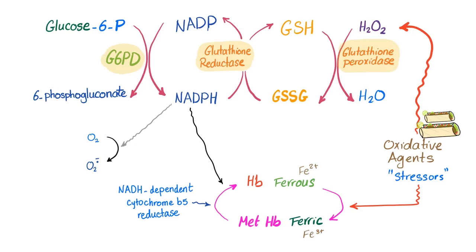If you remember my video on G6PD deficiency: an oxidative agent like the falafel sandwich — specifically Egyptian falafel made of fava beans, which causes favism — produces free radicals and converts ferrous into ferric, which is bad. That's why we need the NADH-dependent cytochrome B5 reductase to reduce ferric back to normal ferrous hemoglobin. NADPH, thanks to G6PD, also converts ferric into ferrous, and the RBC is happy.